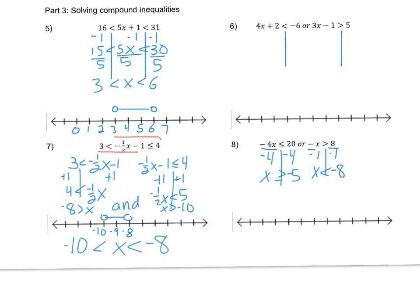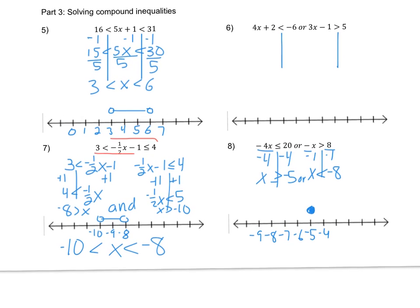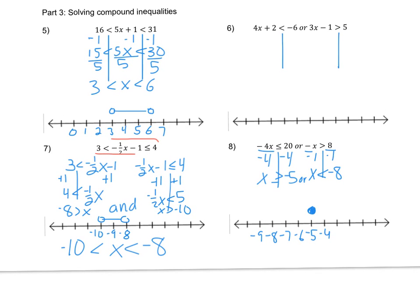Keep in mind, I have to write an or between them in my answer. When I graph this, I number my number line, then I put a closed circle above negative 5, and an open circle above negative 8, and my arrows go outwards, because I want all of the points that are greater than or equal to negative 5, and all the points that are less than negative 8.